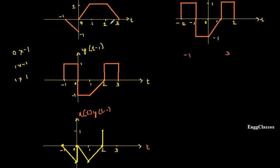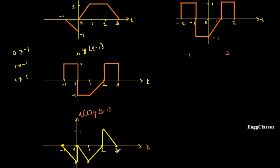Moving on, the last value I need to sketch is at t = 3. x(t) value is 0. y(t-1) — as I am moving from 2 to 3, at position 3 I take it as 1. So 0 times 1 = 0. Previously the amplitude was at 1 and now I get 0 at position 3. I join those two points and this is what I get towards the end. Both signals stop at t = 3, hence the multiplied signal also stops at t = 3.